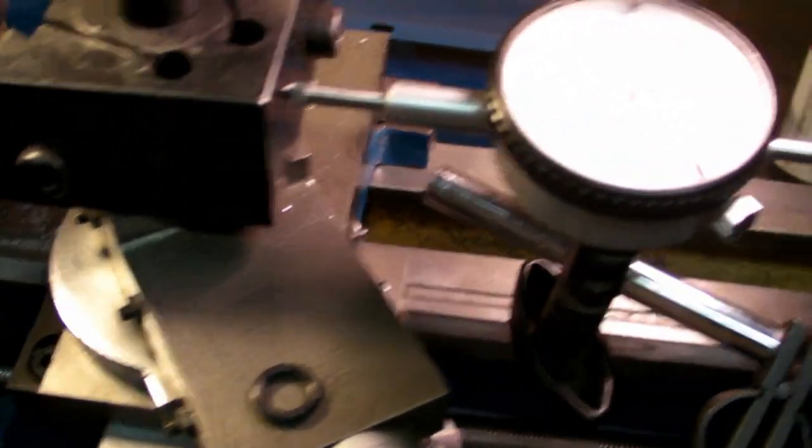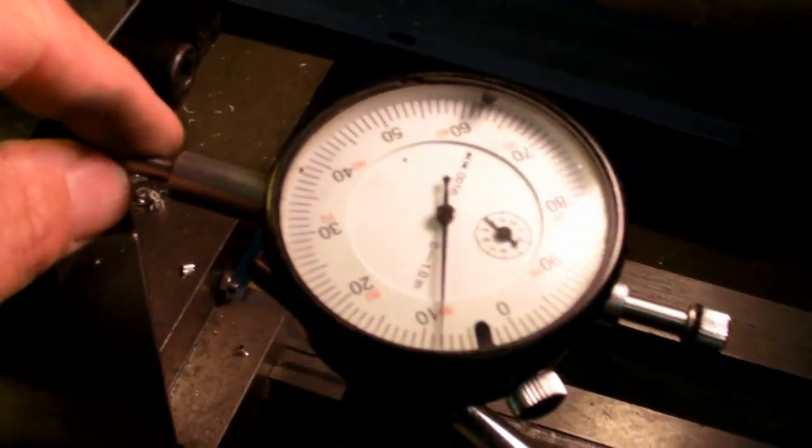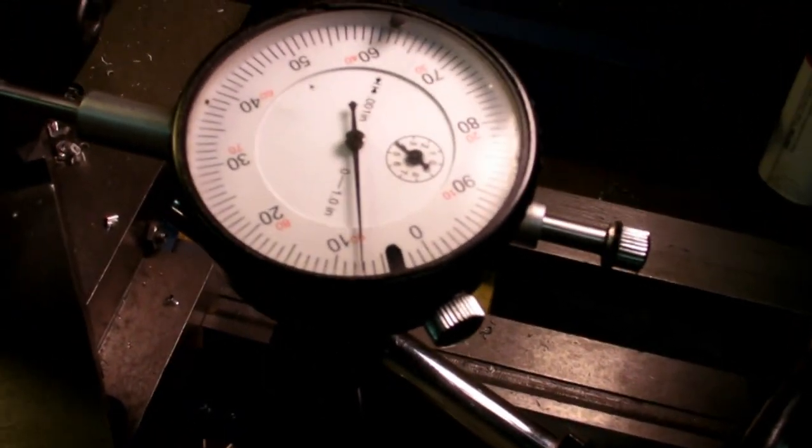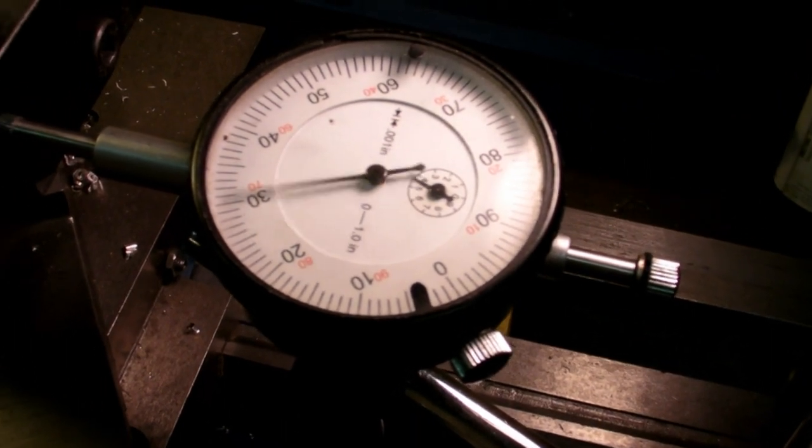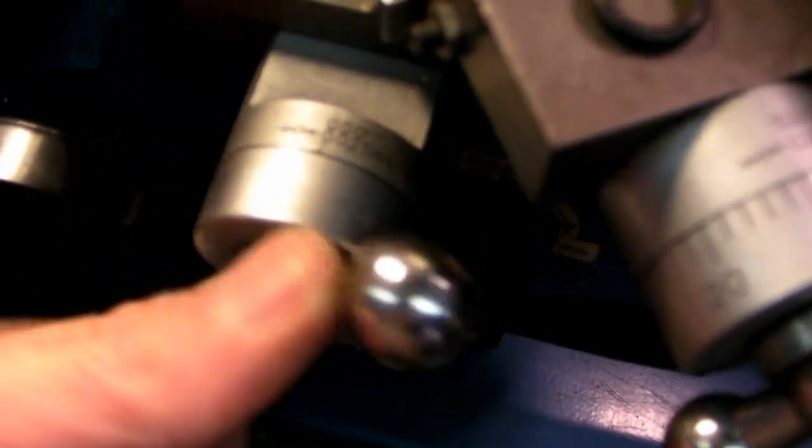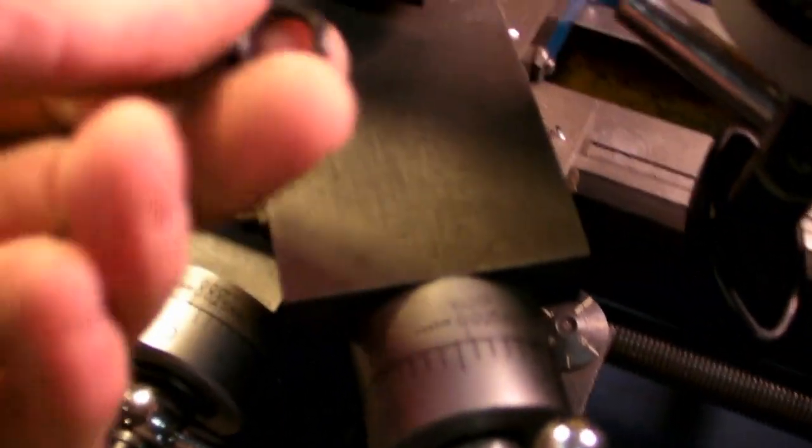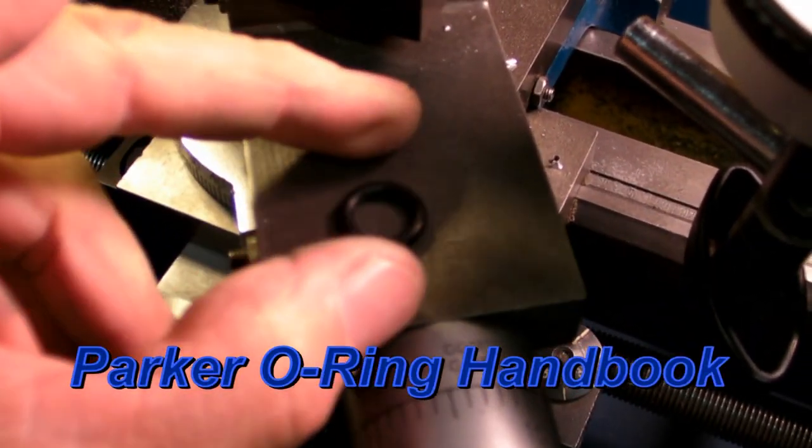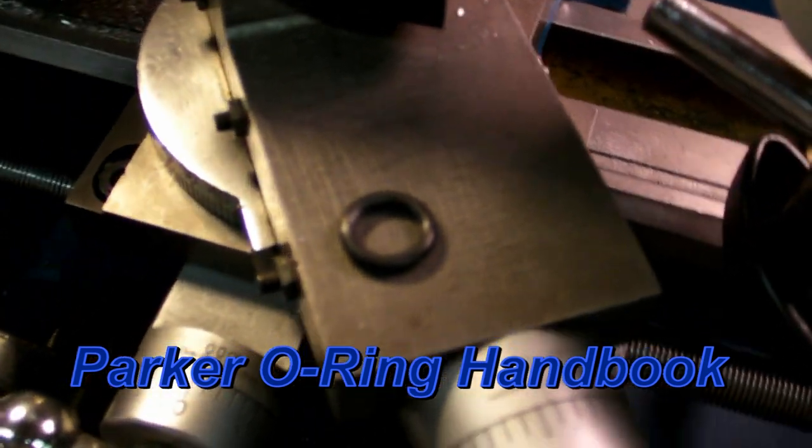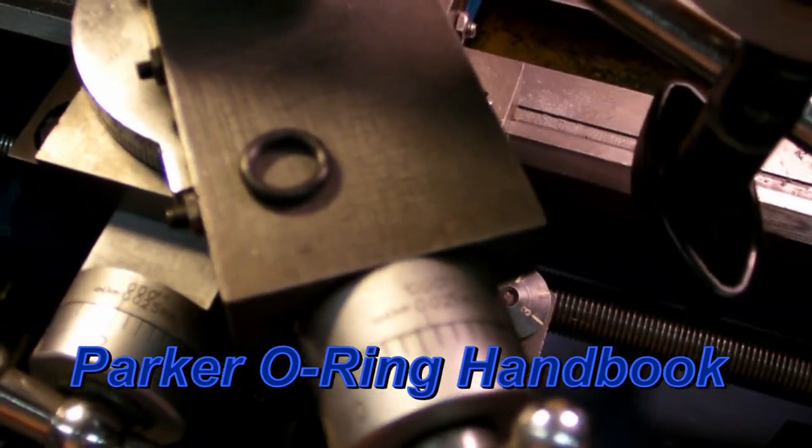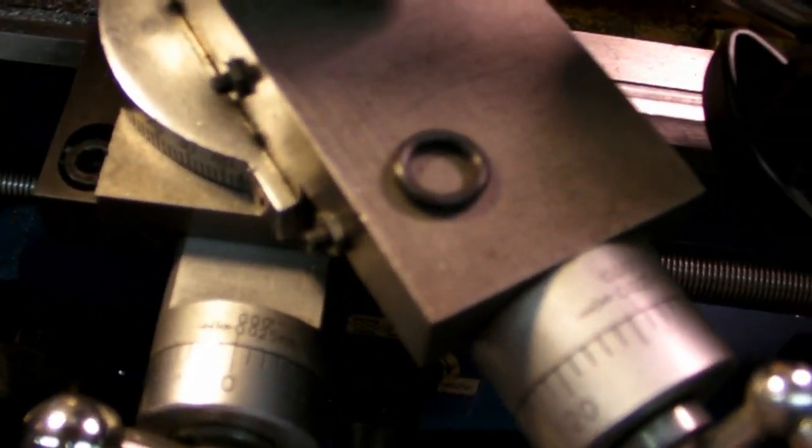So what I got is the indicator here to show me how much I travel back and forth on it so I can make the width of the groove. And then I know on the cross slide how many turns, which is actually two turns, to get it the right depth to make the groove.